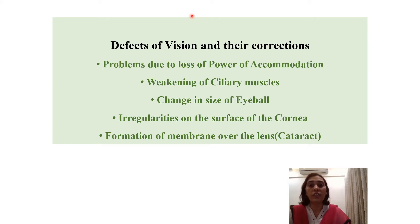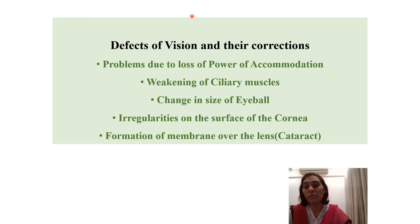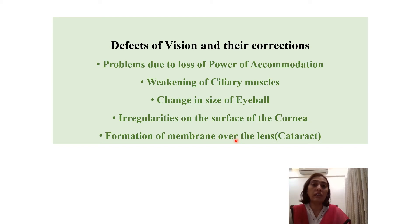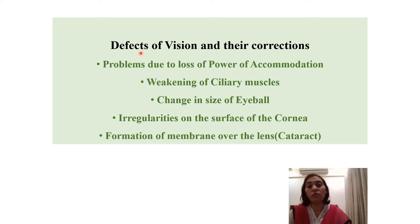The function of the retina is to convert incoming light into electrical signals and send them to the brain via the optic nerve. If the lens becomes hazy it results in cataract, but cataract is treatable and normal vision can be restored. These are some of the defects of vision, and we will study what corrections can be made in each case.